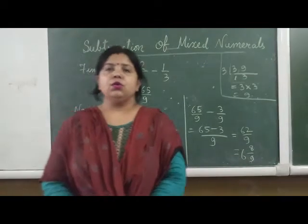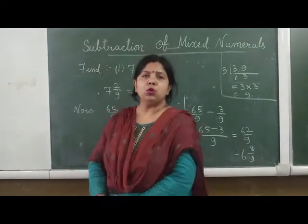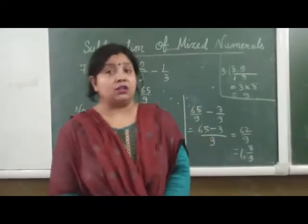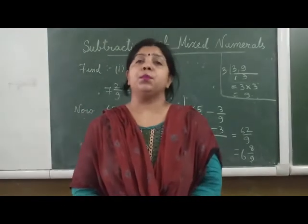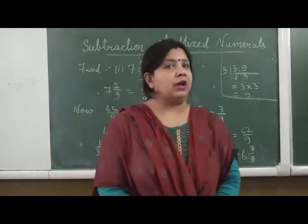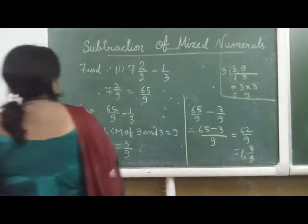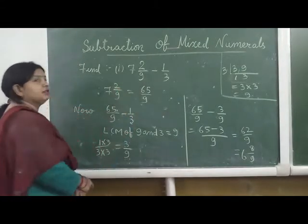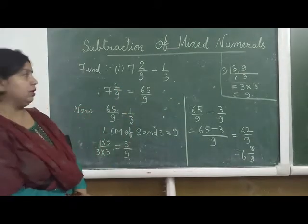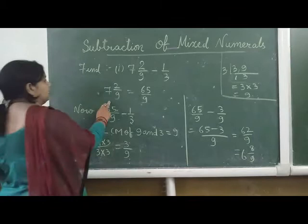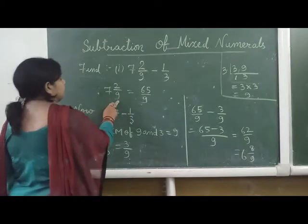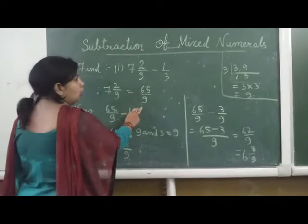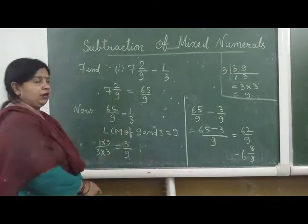So first, what will we do? First, change the mixed fraction into an improper fraction. The example given is 7 whole 2 by 9 minus 1 by 3. First we have to change this mixed fraction into an improper fraction.